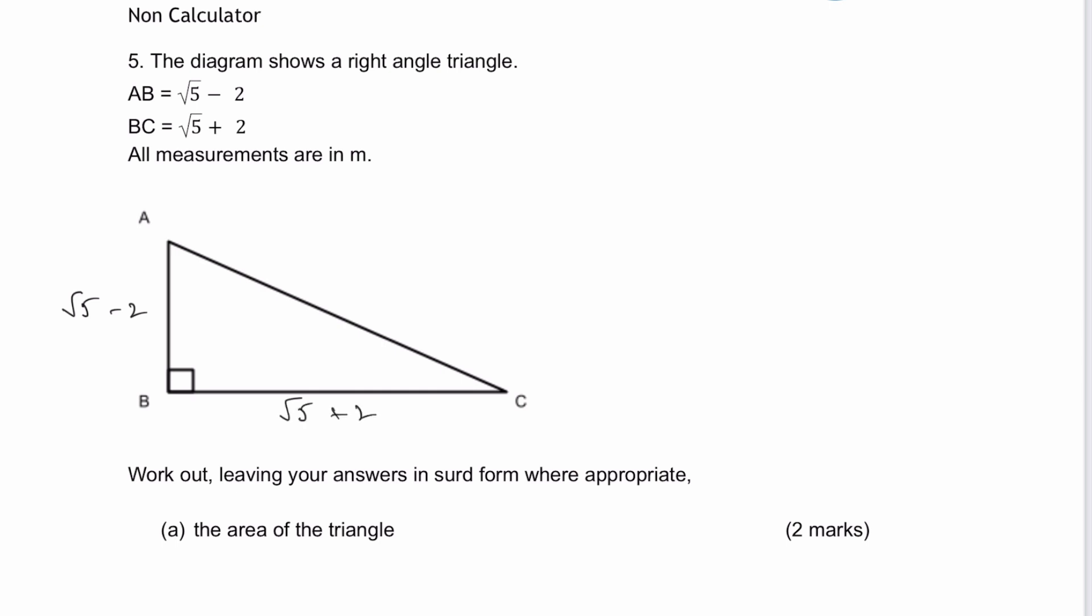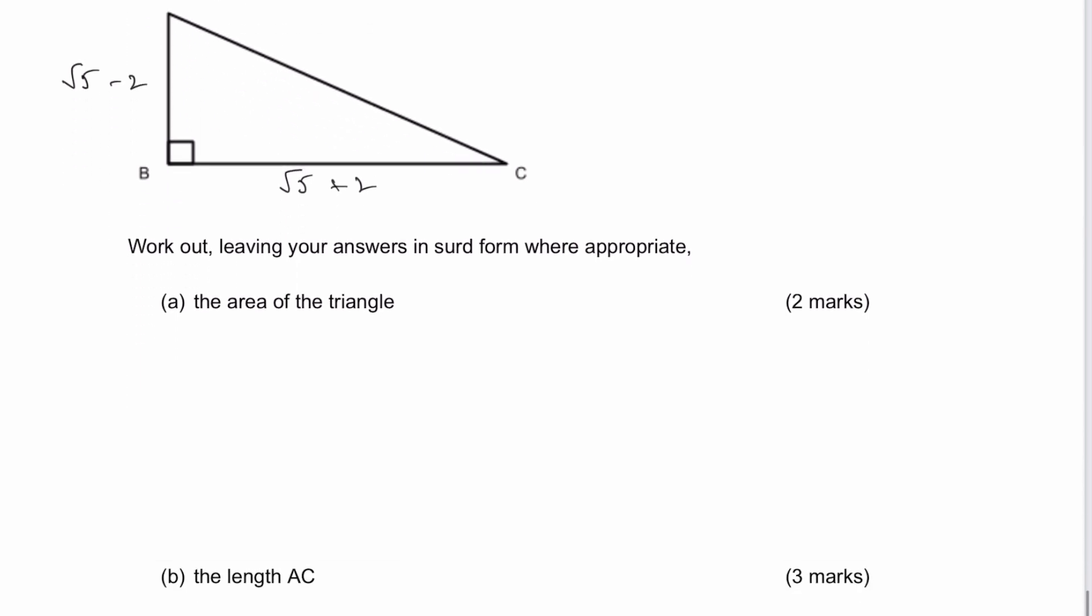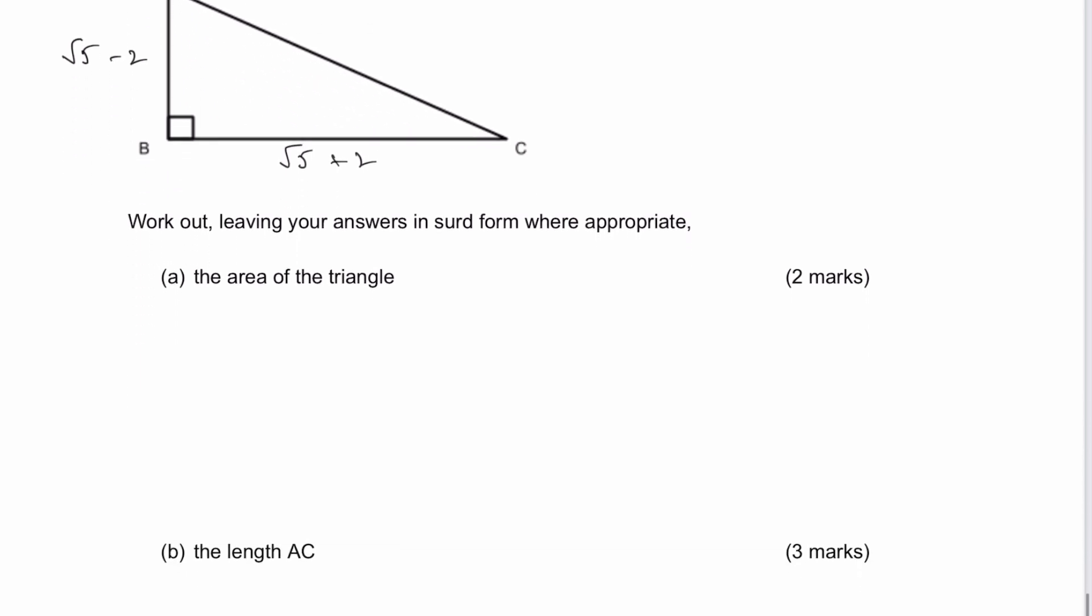And then BC is going to be root five plus two. Then it says work out, leaving your answers in surd form where appropriate. And then firstly, the area of the triangle. Well that should be fairly straightforward. Some people would write this as base times height divided by two. I'm actually going to use a fraction. I'm going to say it's a half base times height.